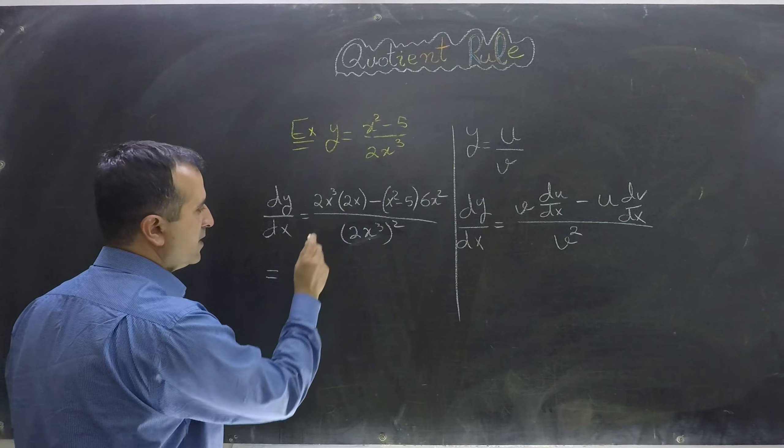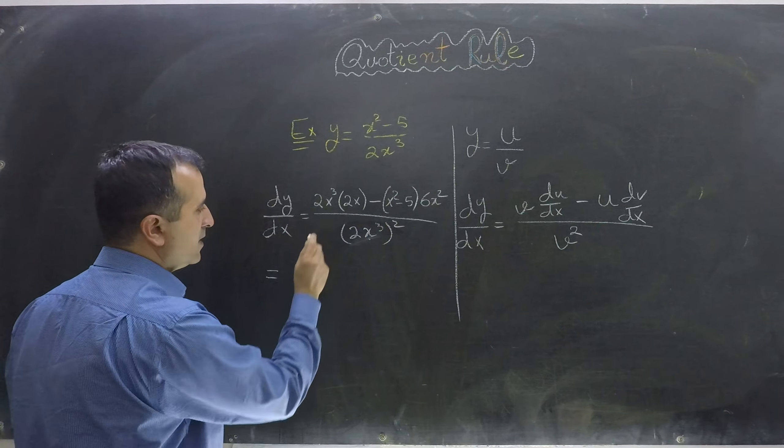Now let's simplify it. It will be 4x raised to power 4 minus 6x raised to power 4 plus 30x squared, divided by 4x raised to power 6. And that will be equal to minus 2x raised to power 4 plus 30x squared over 4x raised to power 6.